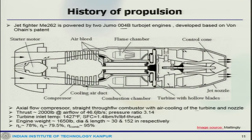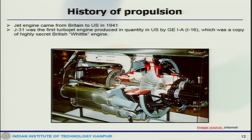Those are some of the specifications for the turbine and its efficiency. Then in 1941 the engine came to Britain and the US, and the J31 was the first turbojet engine produced by a US company — GE 1A — which was a copy of the highly secret British Whittle engine. That is how the first jet engine in the US came about.